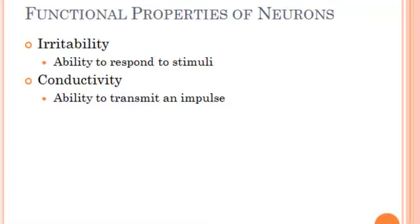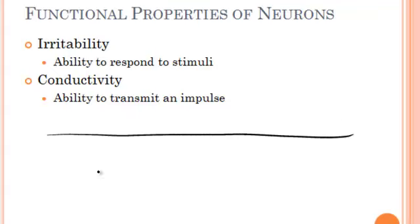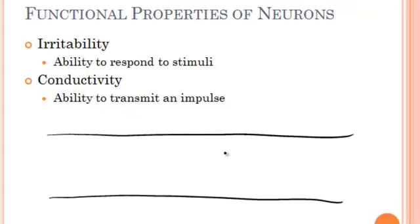Neurons have to be able to be stimulated — they have to be able to pick up a stimulus and then send that stimulus somewhere else. Now we're going to talk about how that happens — something called an action potential or a nerve impulse. Before we do that, I want to remind you about cells. When we talked about cells earlier, we talked about how cells have a plasma membrane. These two lines represent an axon, which as a part of a cell has a plasma membrane surrounding it.